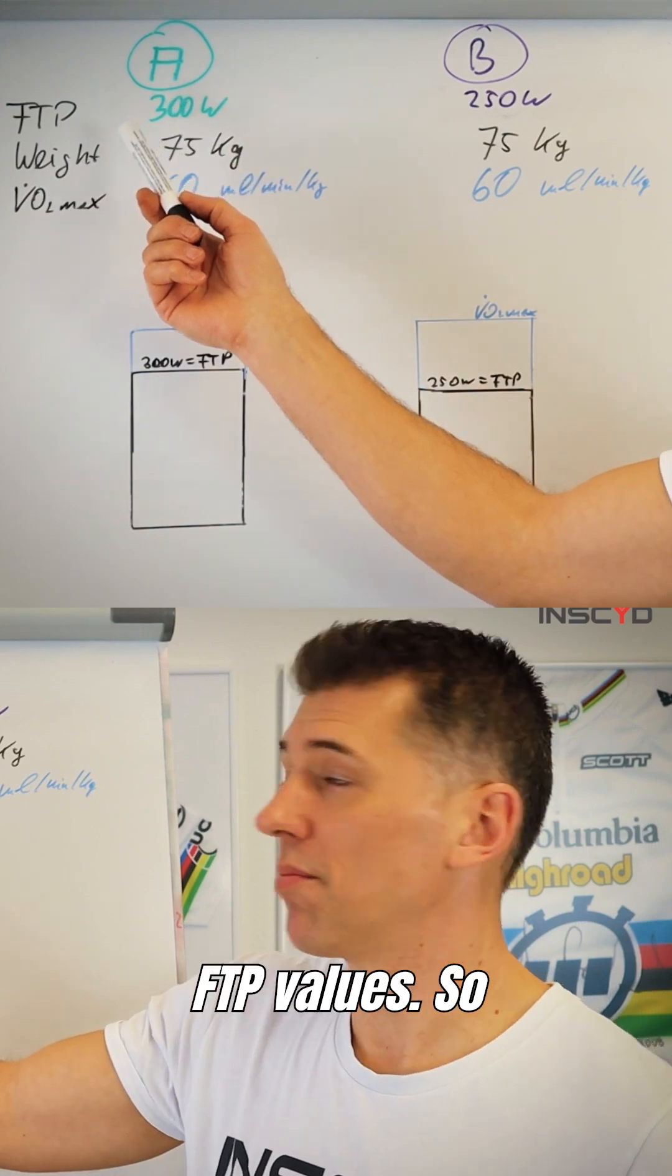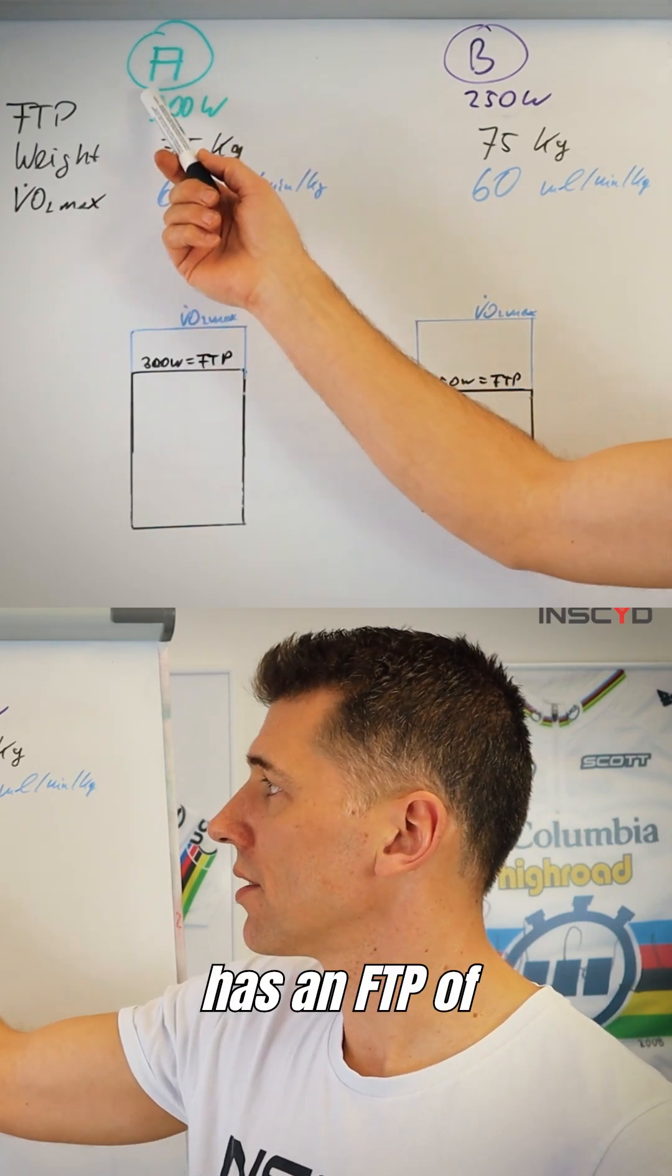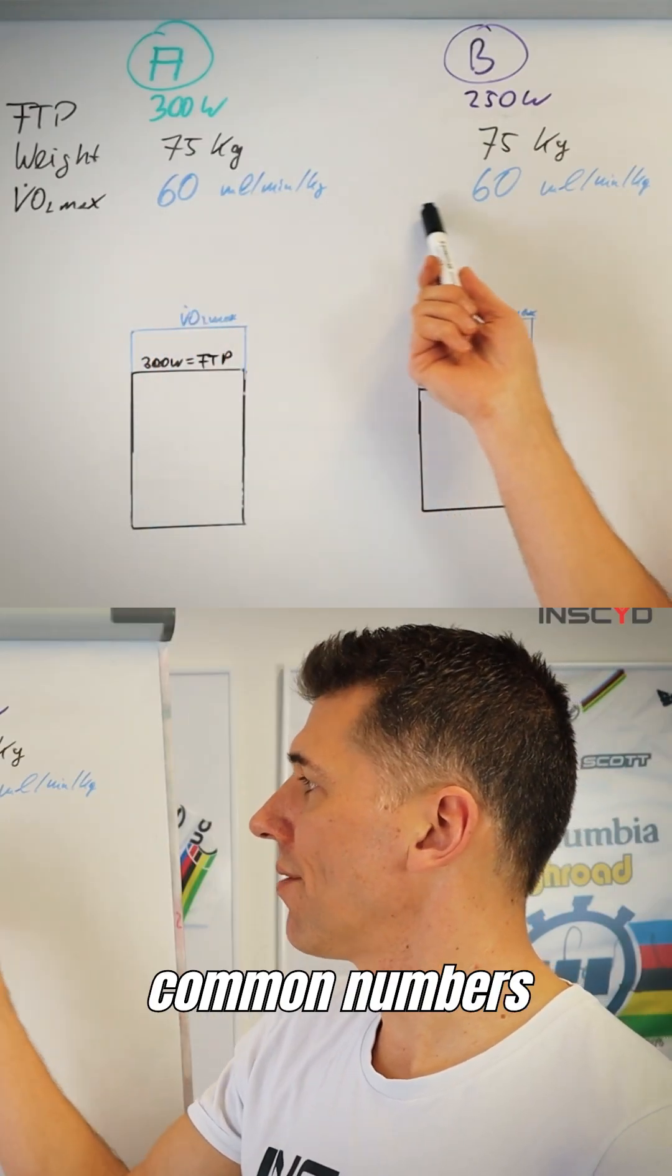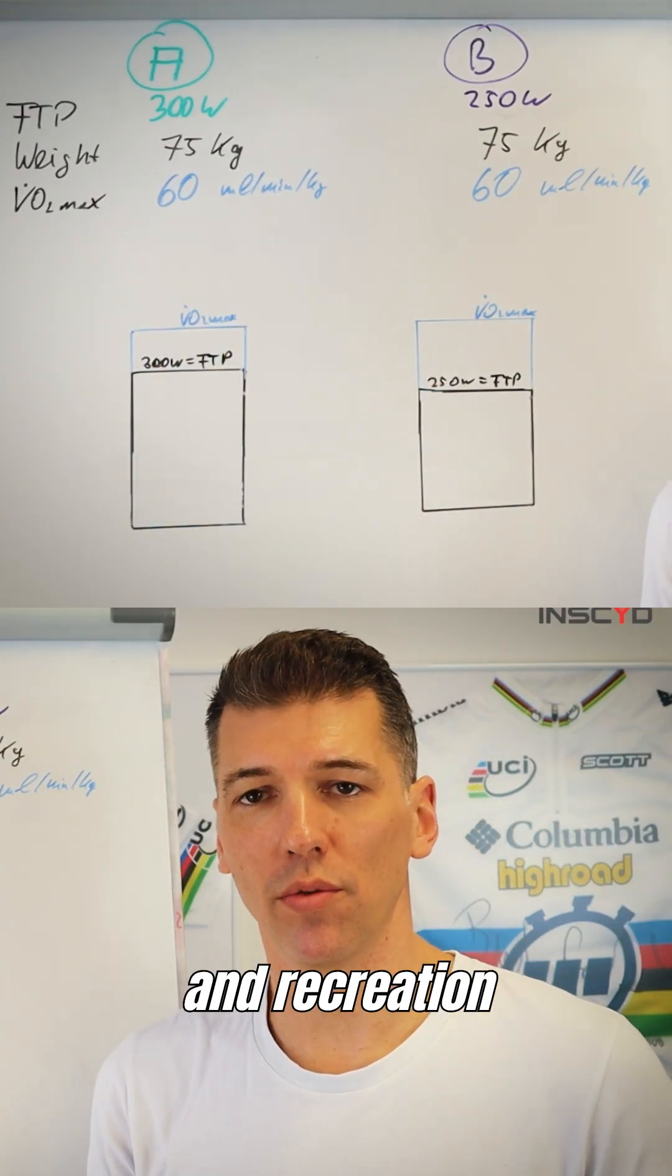And let's assume they also have different FTP values. So athlete A has an FTP of 300 watts, athlete B of 250 watts. You can see these are kind of normal, common numbers for amateur and recreational athletes, right?